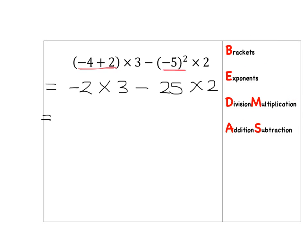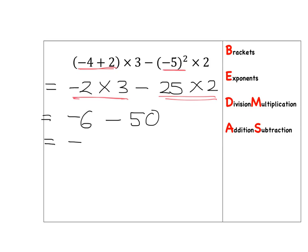I have a multiplication and another multiplication to deal with. Negative 2 times 3 gives me negative 6. Then 25 times 2 gives me 50. Now all I've got left is the subtraction: I'm at negative 6, I subtract 50 — in other words I go 50 further down — and I end up at negative 56.